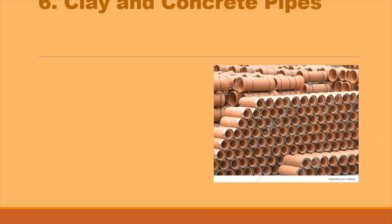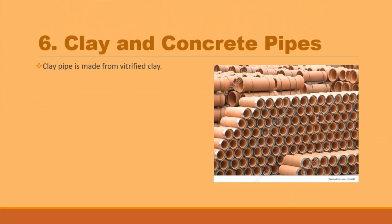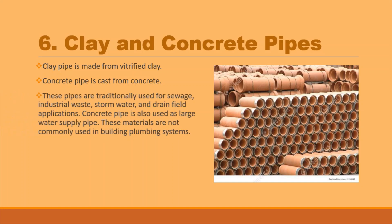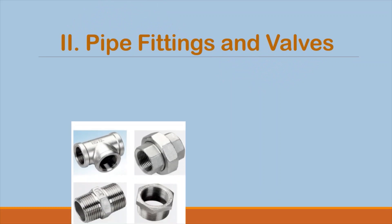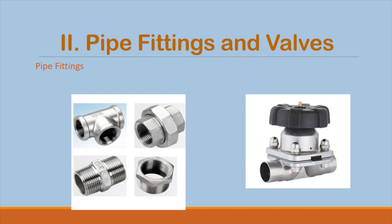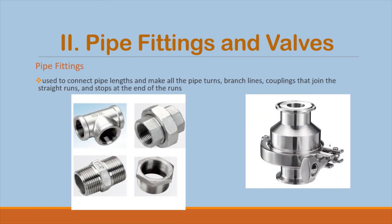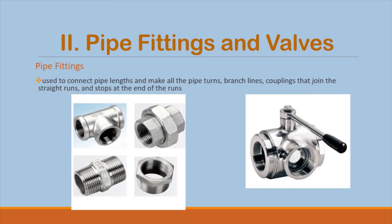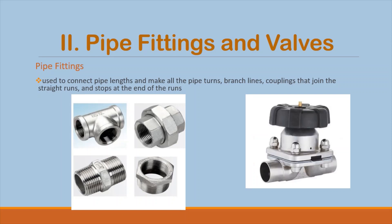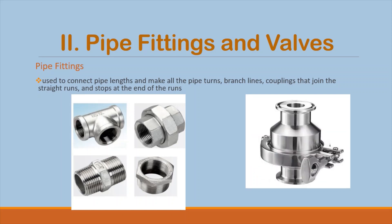Clay and concrete pipes: clay pipe is made from vitrified clay, and concrete pipe is cast from concrete. Pipe fittings are used to connect pipe lengths and make all the pipe turns, branch lines, couplings that join the straight runs, and stops at the end of the runs.